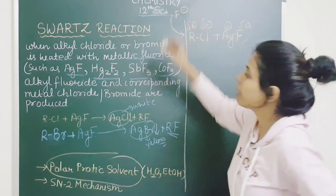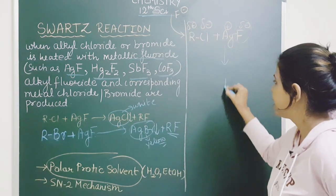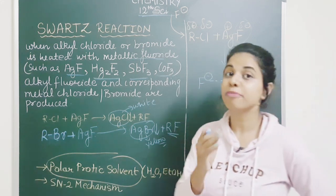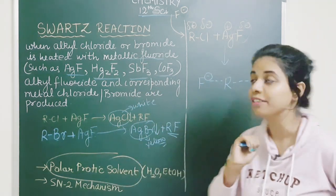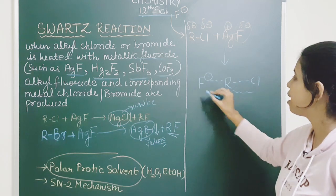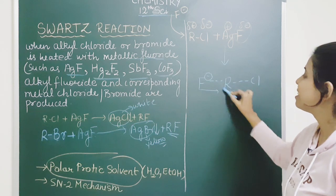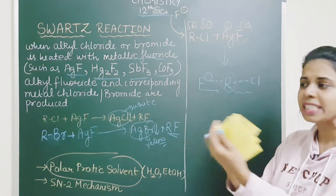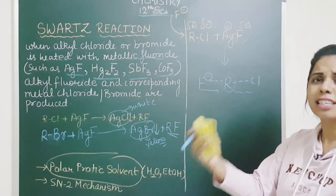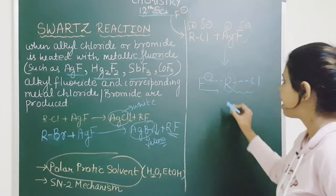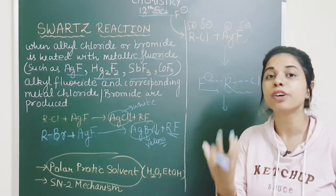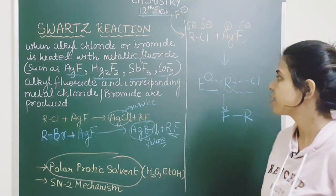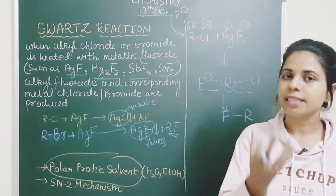If you remember the SN2 reaction: there is a transition state. From the back side F⁻ is approaching and from the front side Cl is leaving. It is like this carbon is saying to chlorine 'you just go away' and asking fluorine to come along with it. So this is a simultaneous process — chlorine is being pushed out — and it proceeds with an inversion of configuration, ultimately forming RF. So this is how the Swarts reaction takes place.